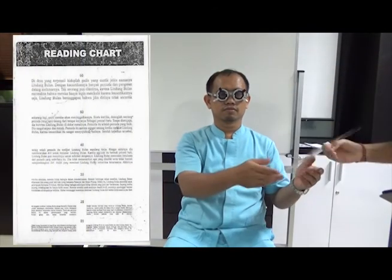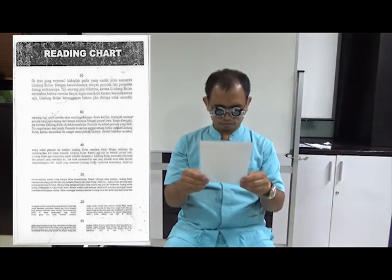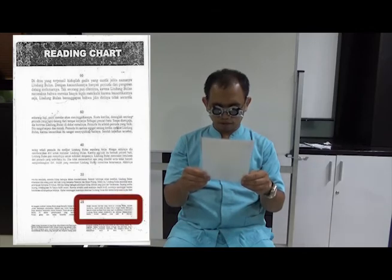Please hold the Jaeger chart at 30 centimeters away from you. Can you please try to read each word on the line of the smallest characters that you can see? We will then note the corresponding J value according to the Jaeger chart and record the binocular acuity achieved.